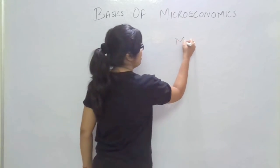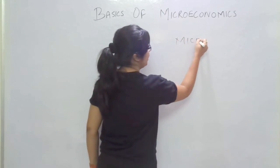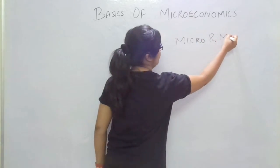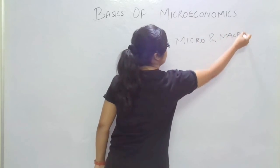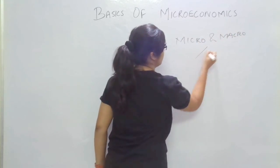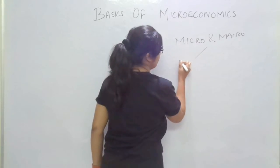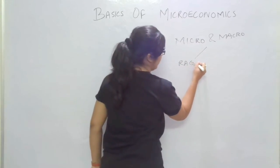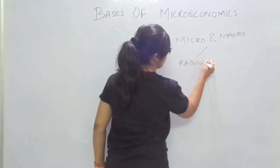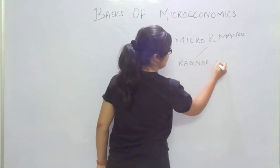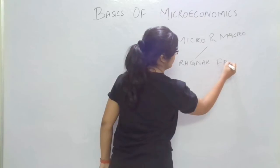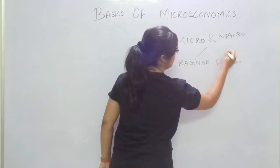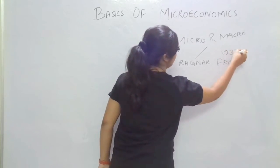The terms micro and macro were coined by Ragnar Frisch, an economist, in the year 1933.